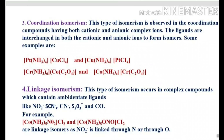The fourth type is linkage isomerism. This occurs in complex compounds containing ambidentate ligands — ligands that show two connecting sites, such as NO2, SCN, sulphito, and carbonyl. In one complex the ligand connects through one site, and in another complex it connects through the other site. For example, in pentamine nitro cobalt chloride, the first isomer has cobalt connected through nitrogen, while the second isomer has cobalt connected through oxygen. This is known as linkage isomerism.